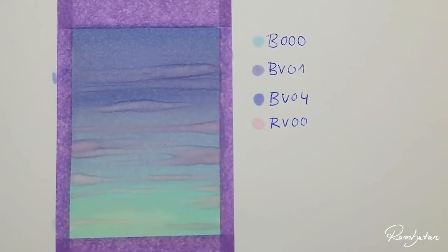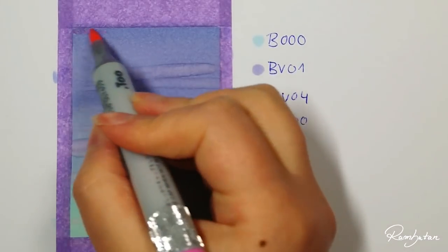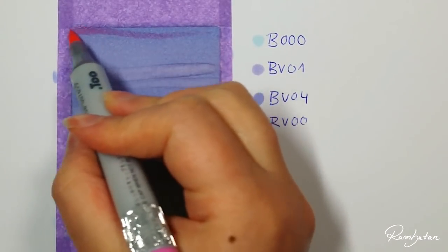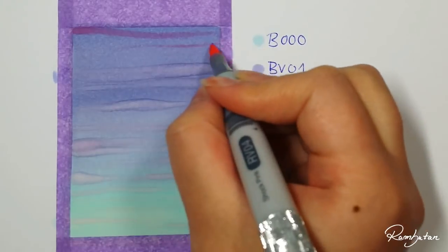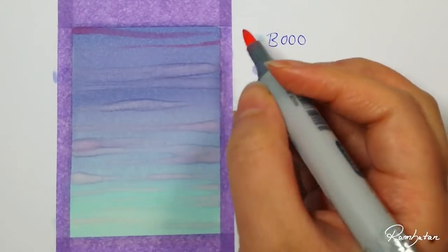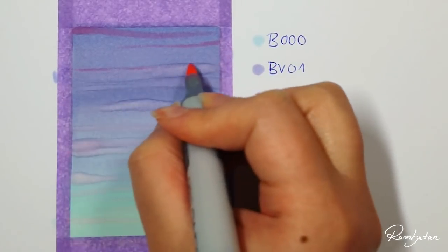You can leave it now as it is if you like the way it turned out, or you can add more depth using RV04 shock pink in the darker area above towards the center of the picture, like it's shown.